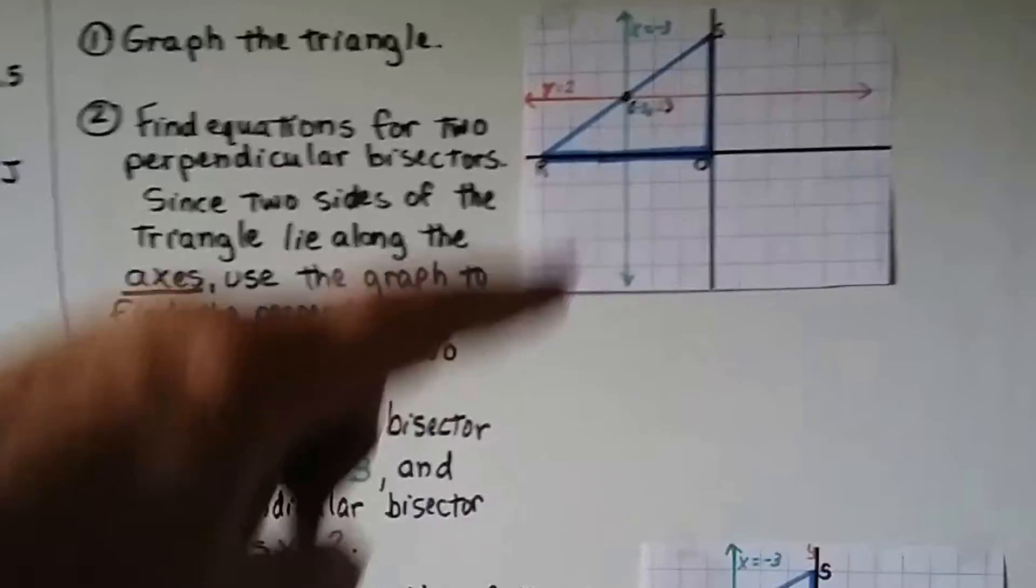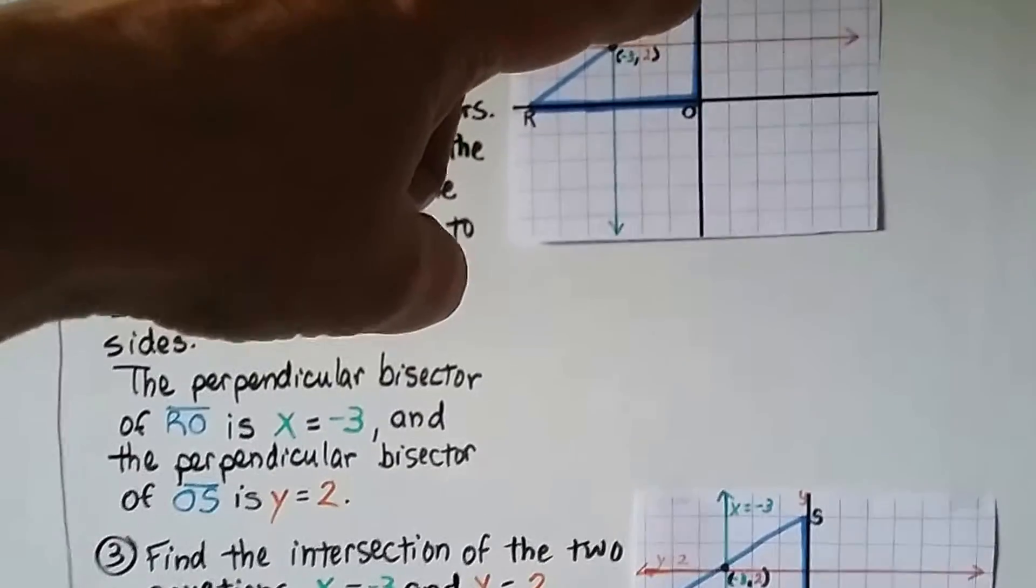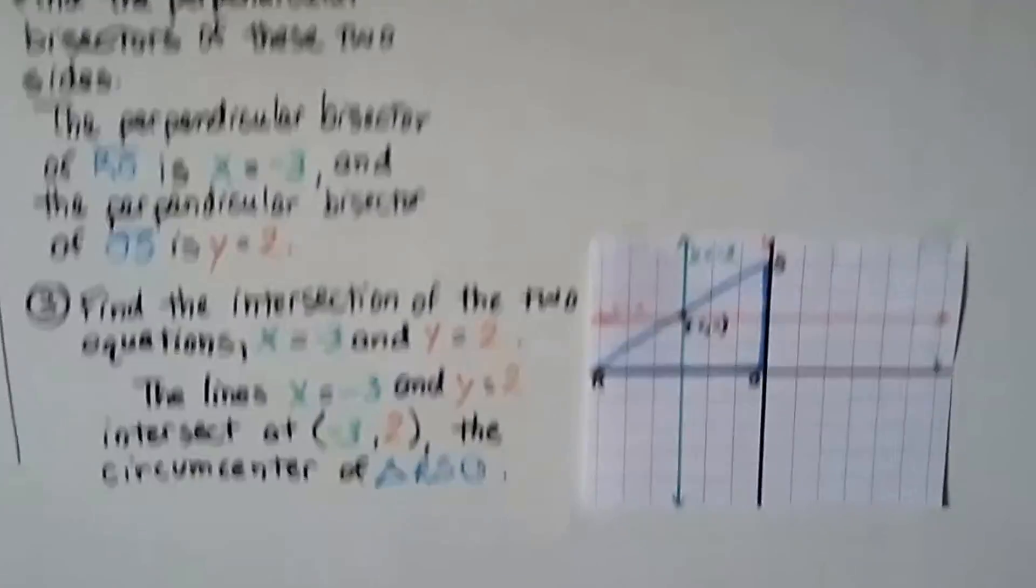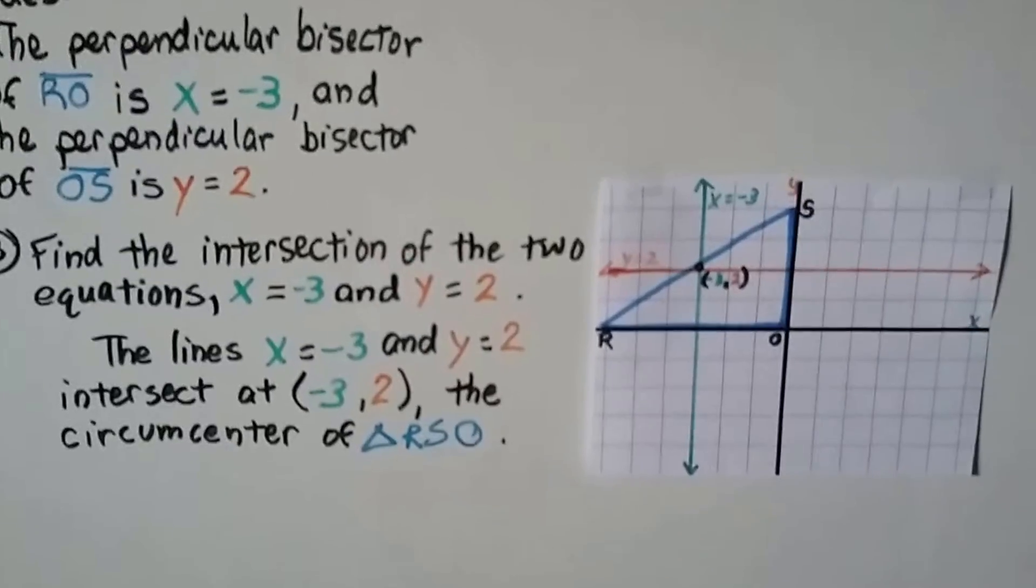And the perpendicular bisector for OS, if this is 4, then the bisector would be at 2. So y equals 2. Here's the same drawing so we didn't have to stretch.